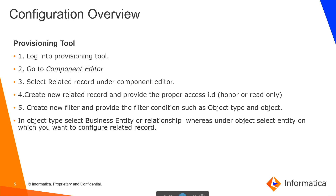Configuration Overview — Provisioning Tool Configuration. Go into the Provisioning Tool and go to the Component Editor. Select Related Record under Component Editor. Create a New Record and provide the proper access, that is Owner or Read Only. Create a New Filter and provide the filter conditions such as Object Type and Object. In Object Type, select Business Entity or Relationship, whereas under Object, select the Entity on which you want to configure Related Record.